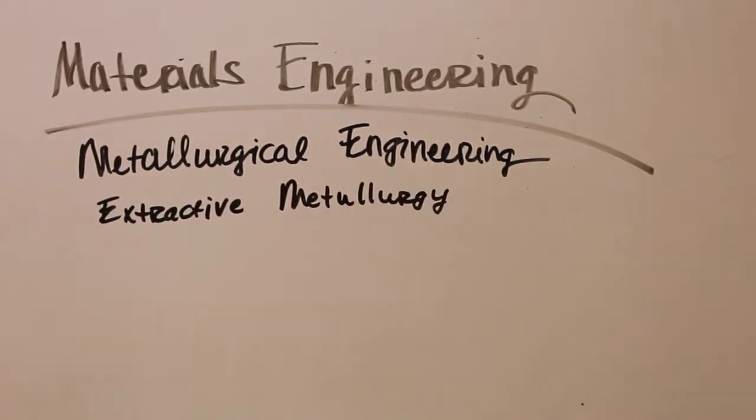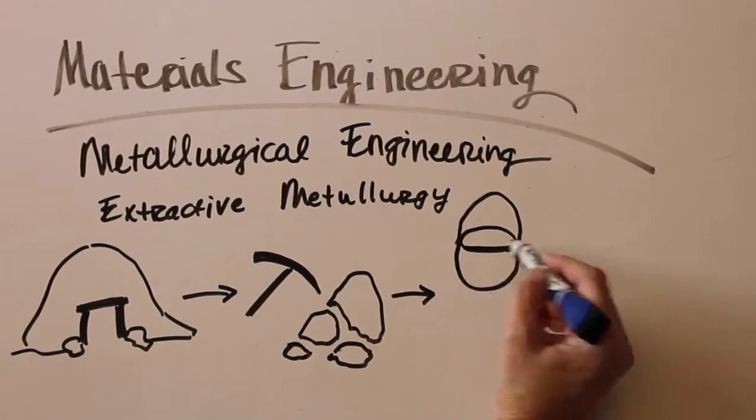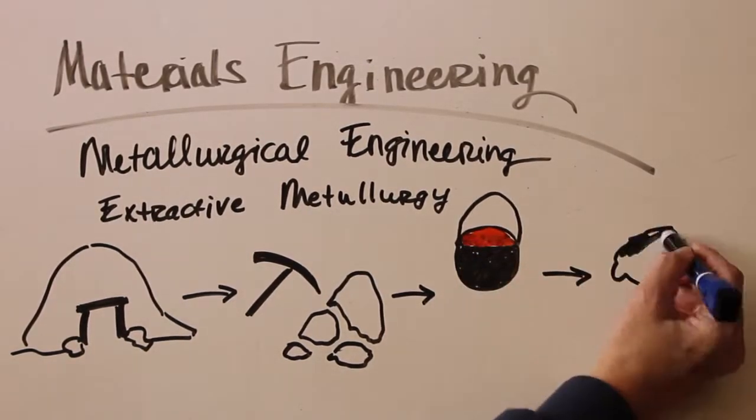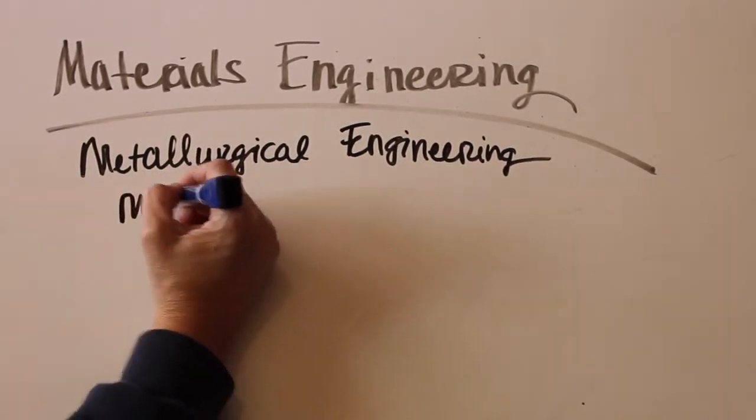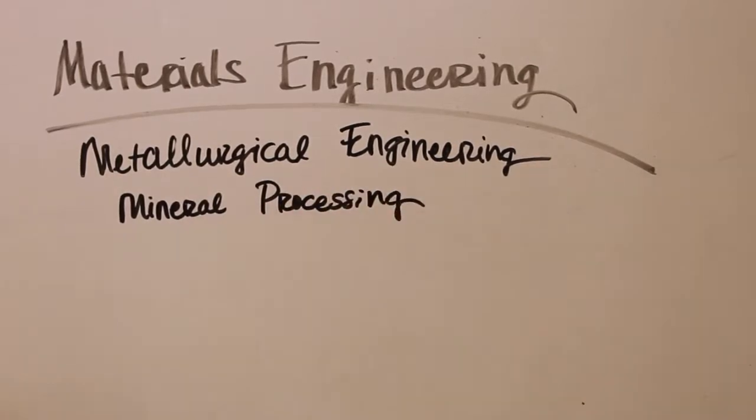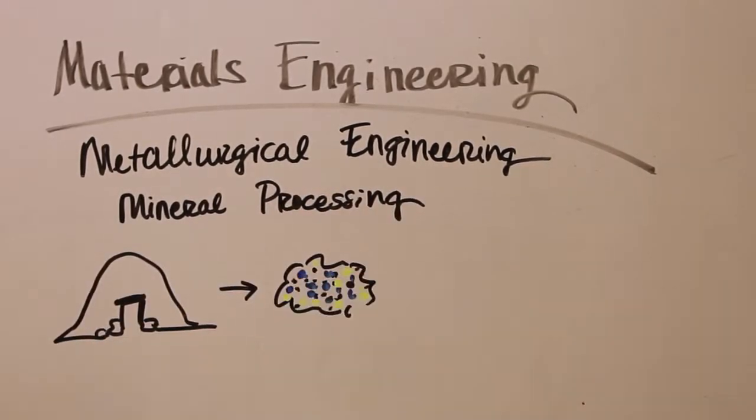Extractive metallurgy is the process and methods of extraction of materials from their natural mineral deposits. Mineral processing is the process of separating commercially valuable minerals from their ores.